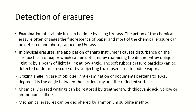For detection of erasures: chemical erasers change the fluorescence of the paper and are detected by UV radiation. Physical erasers disturb the surface of the paper and are examined using an oblique light source. Soft rubber eraser particles can be detected under a microscope or by iodine vapours. The grazing angle in oblique light examination is 10 to 15 degrees — the angle between the incident ray and the reflected surface. Chemically erased writings can be restored using thiocyanic acid yellow or ammonium sulphide. Mechanical erasures can be deciphered by the ammonium sulphide method.